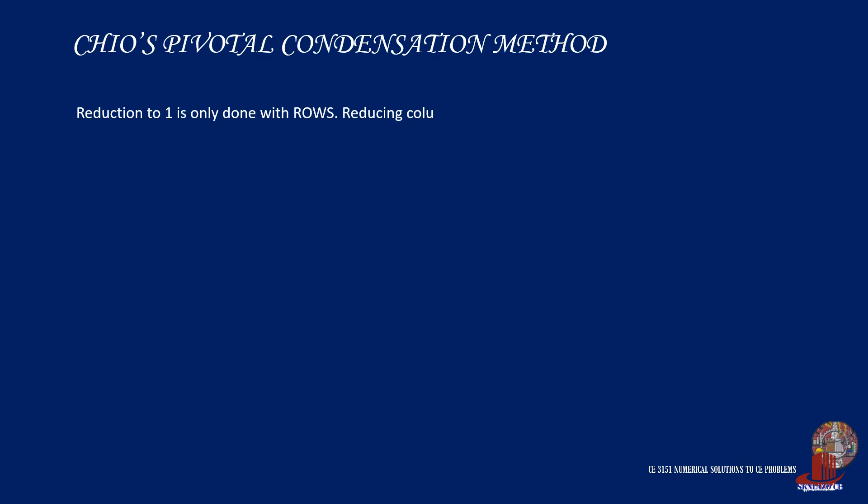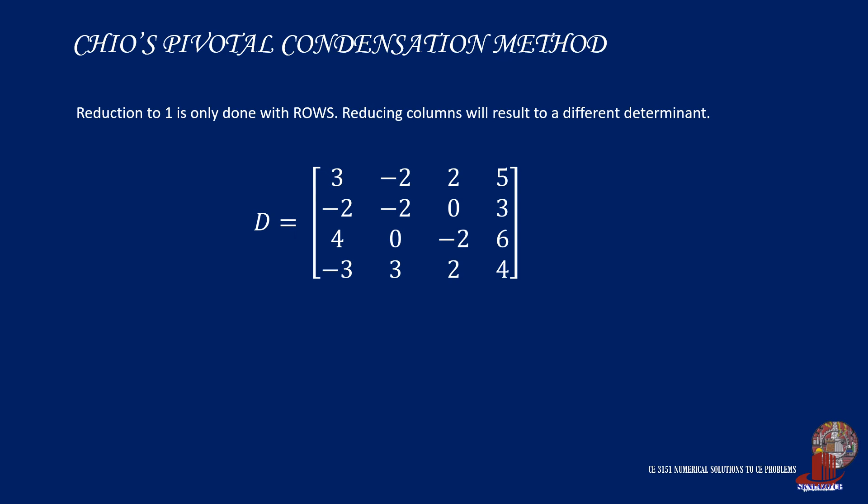Now, there might be some who would be tempted to use the third column of the matrix as most elements are 2. It would be easy to generate 1 if we divide this column by 2. However, factoring or extracting a common factor is done only through rows. The reason will be explained in more detail when you reach the application of determinants in solutions to systems of linear equations.